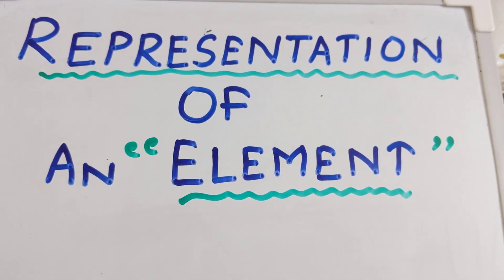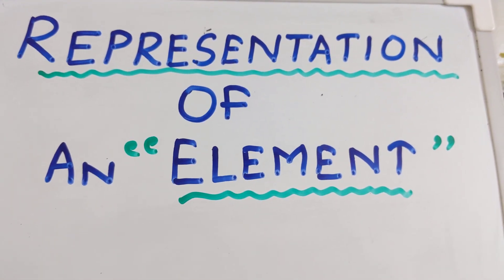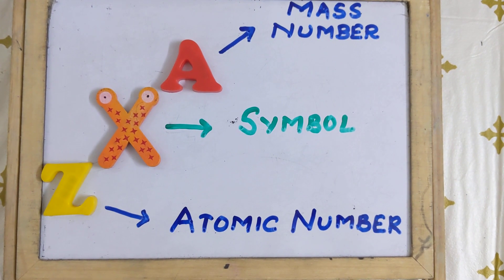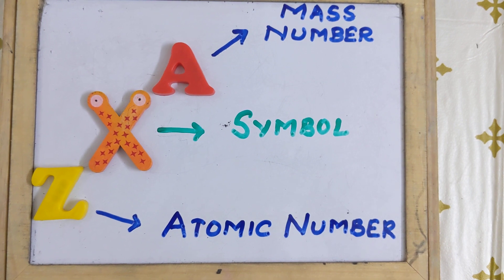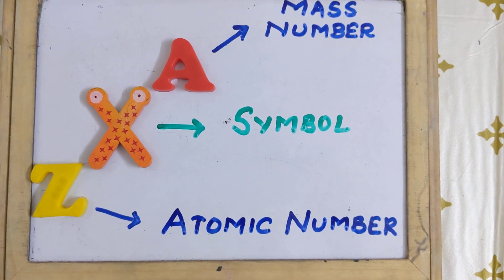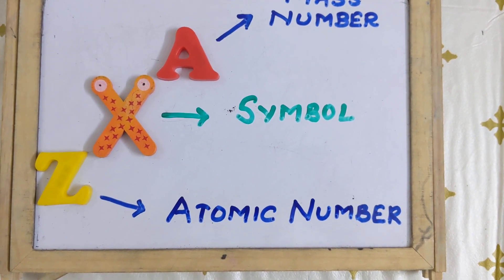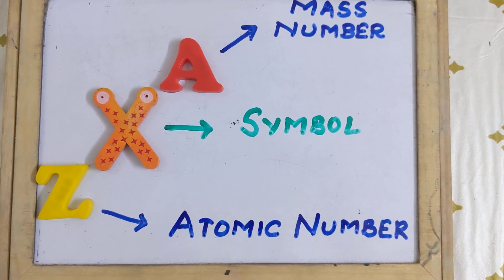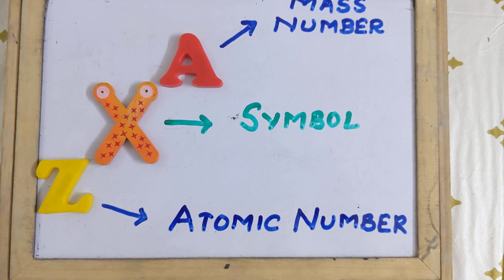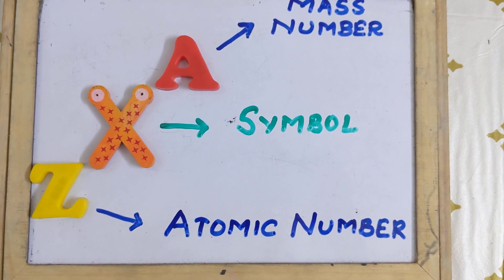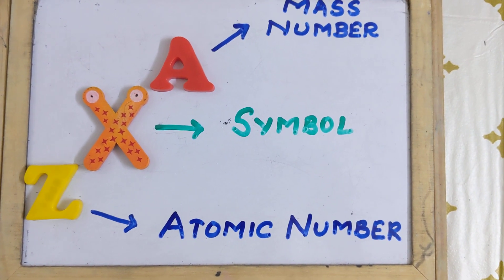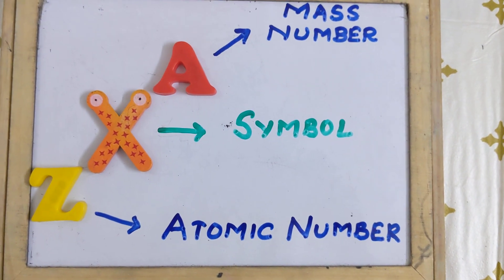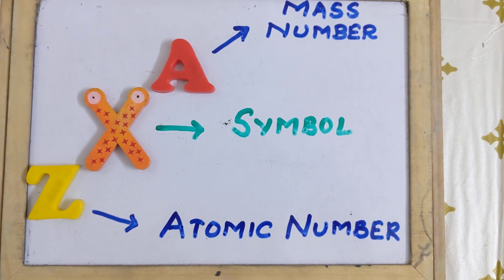What is meant by the representation of an element? Any element can be represented in the form X, A, Z as you see in front of you. Here X stands for the symbol of any element. A, written at the top, is known as the mass number. Z, written at the bottom, is known as the atomic number of the element. So A and Z are respectively the mass number and atomic number of any element with the symbol X.